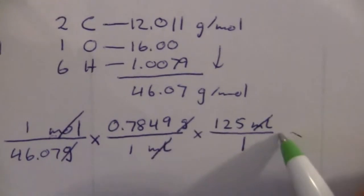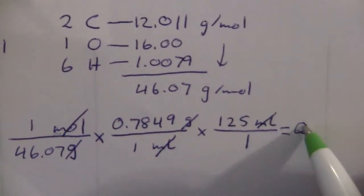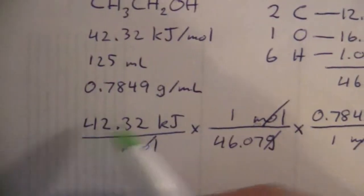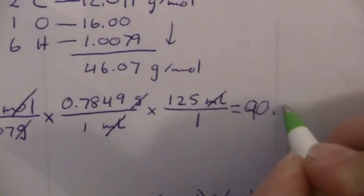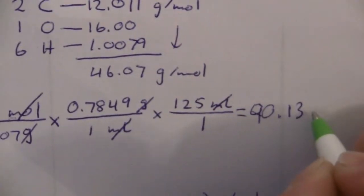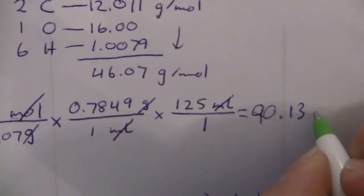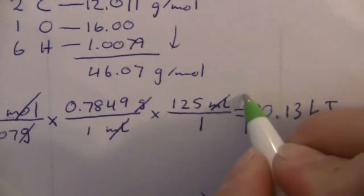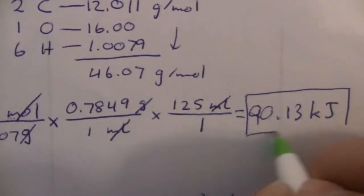So here we have 90 point, and I don't need but four, so I'll just say 90.13 kilojoules. So that is the final answer.